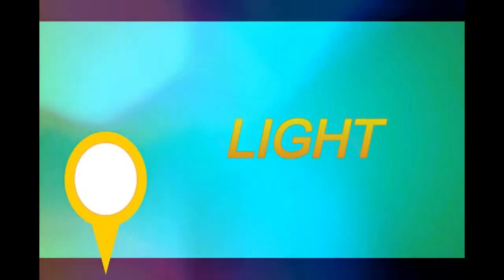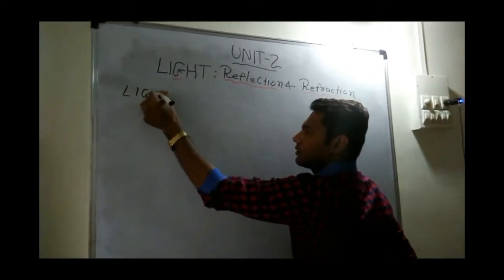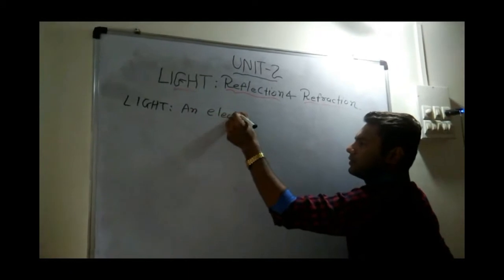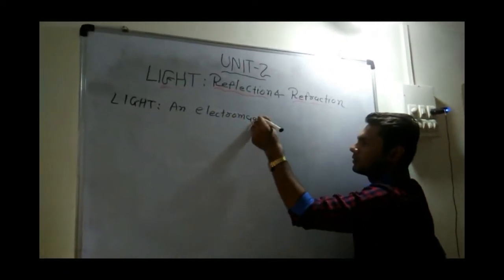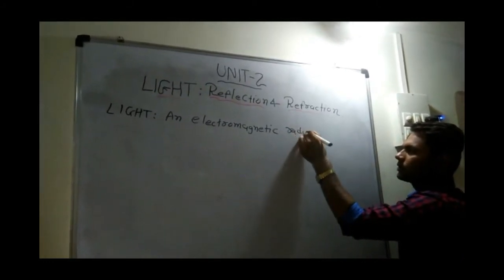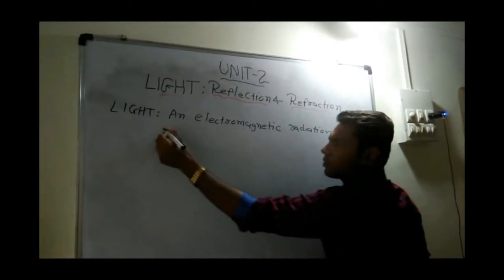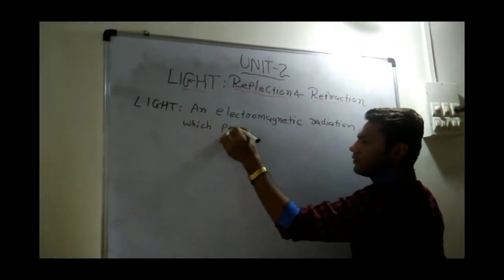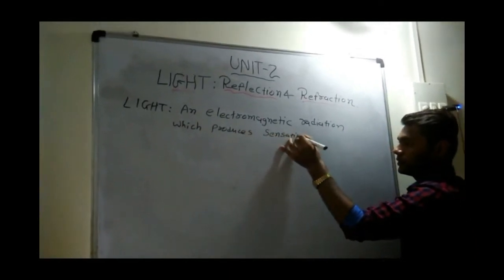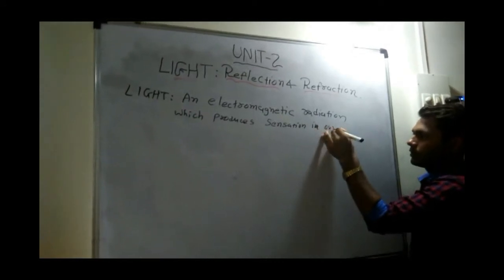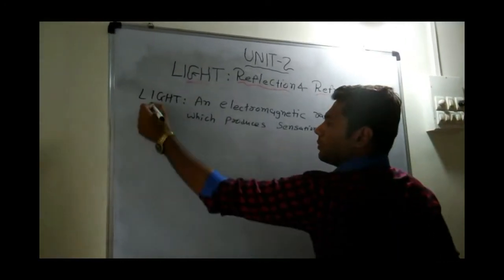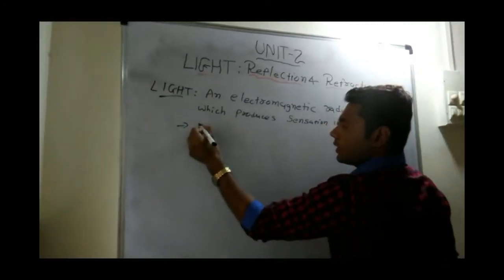Let's first look at three terms, and the first is light. What is light? The variety of objects in the world around us are visible due to light. Light is an electromagnetic radiation which produces sensation in our eyes.